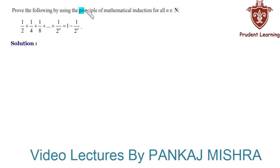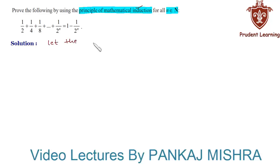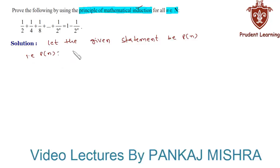Prove the following by using the principle of mathematical induction for all n belonging to natural numbers. In this question we have an equation and we need to prove it by using the principle of mathematical induction. Let the given statement be P(n), such that 1/2 + 1/4 + 1/8 all the way up to 1/2^n equals 1 minus 1/2^n.